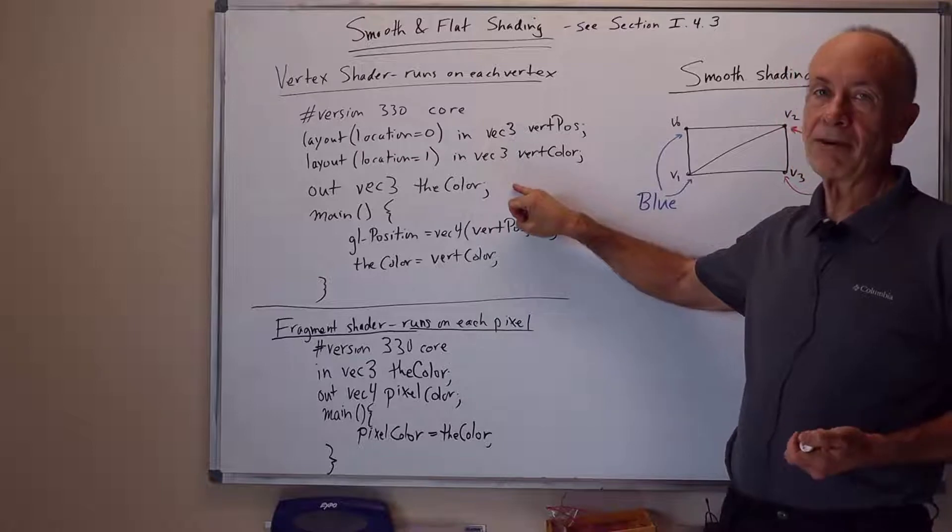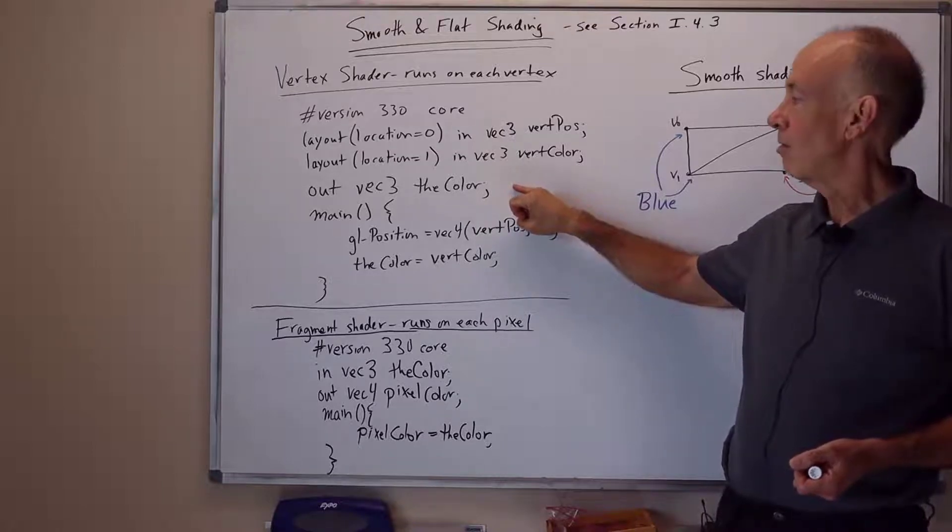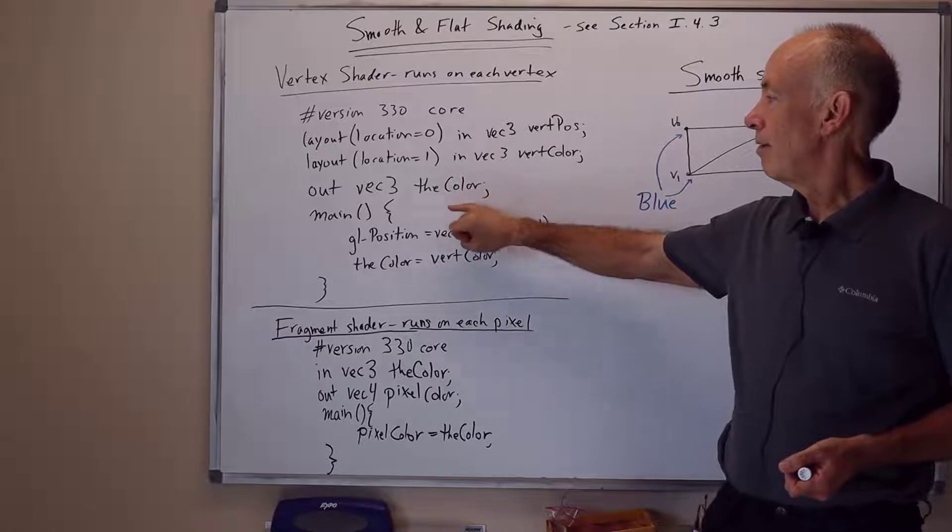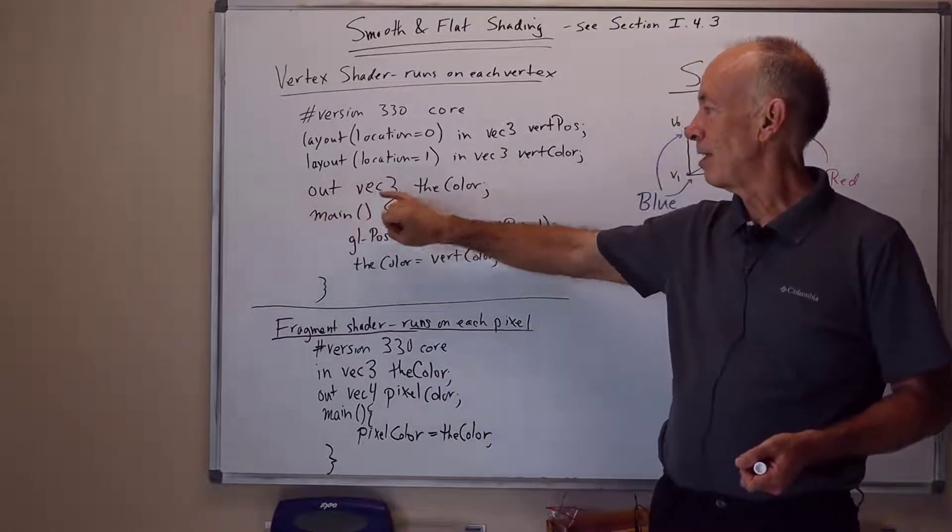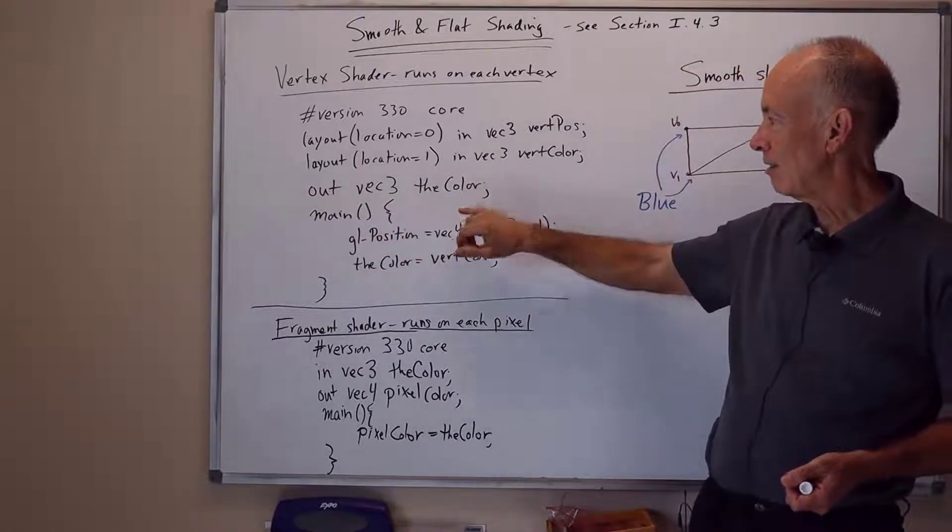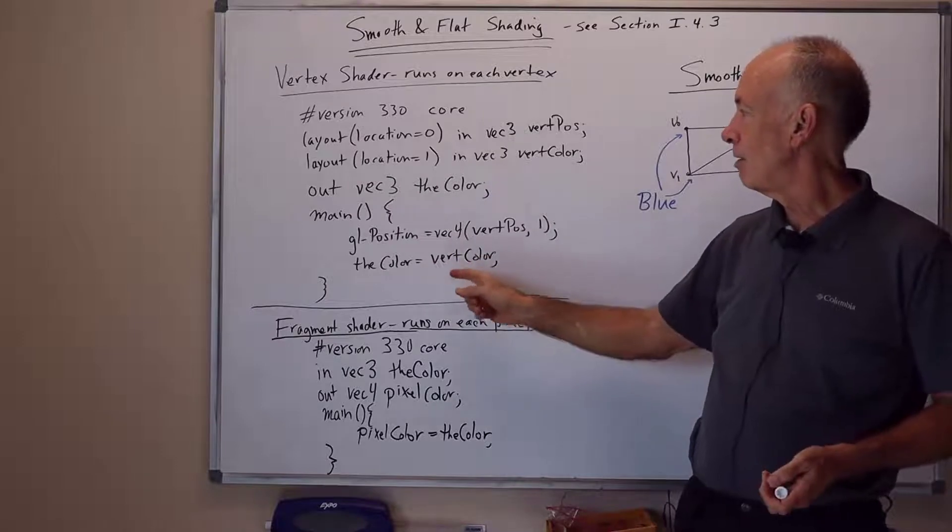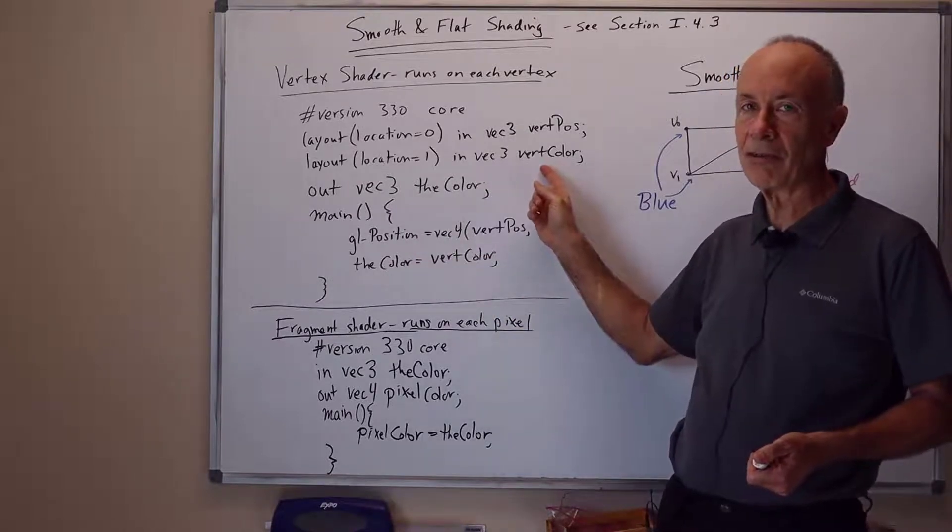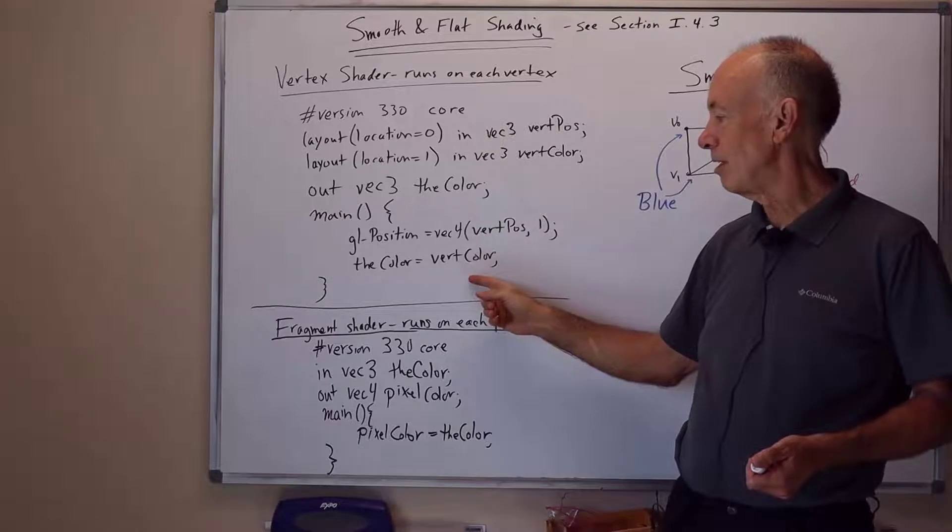This is done by declaring a variable to be an out VEC3, the color. The out means it's an output variable. VEC3 means it's a vector length 3. The color is the name of the variable. And all we do is take the input vertex attribute color, the vert color, and output it as the color.